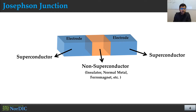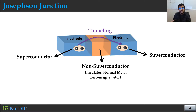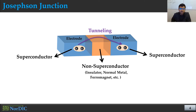As I explained, in superconducting materials we have Cooper pairs. When we try to flow some current between these Josephson Junction devices, these Cooper pairs tunnel from one superconducting electrode to the other through the barrier material. This tunneling mechanism is the main mechanism for current flow through Josephson Junction devices.